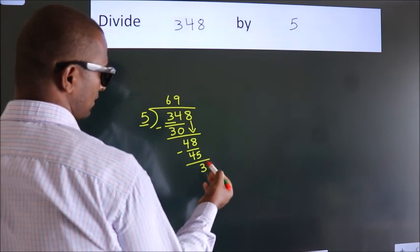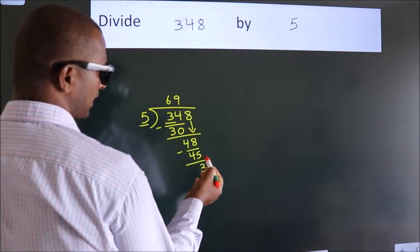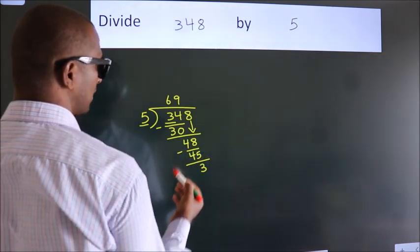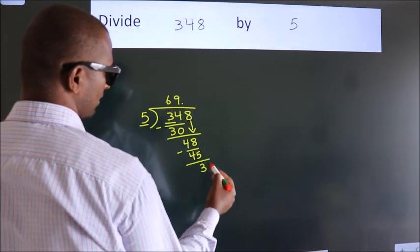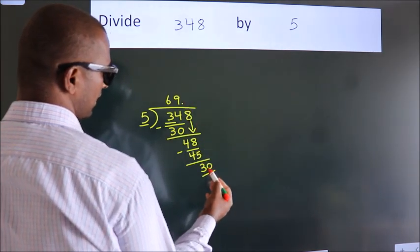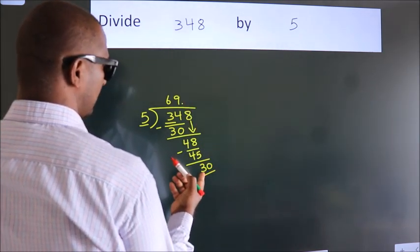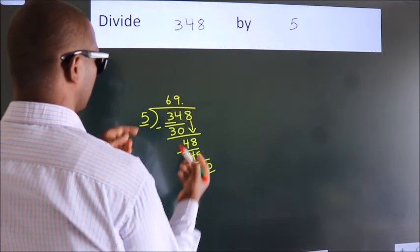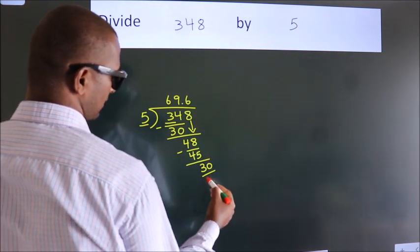After this, no more numbers to bring it down. So what we do is, we put a dot and take 0. So 30. When do we get 30 in the 5 table? 5 times 6, 30.